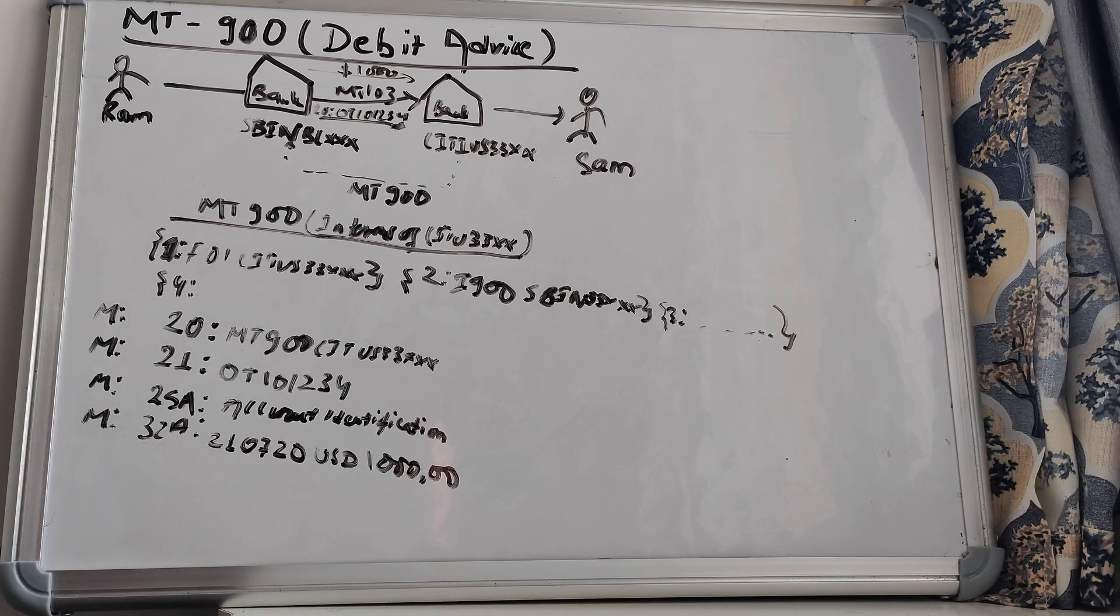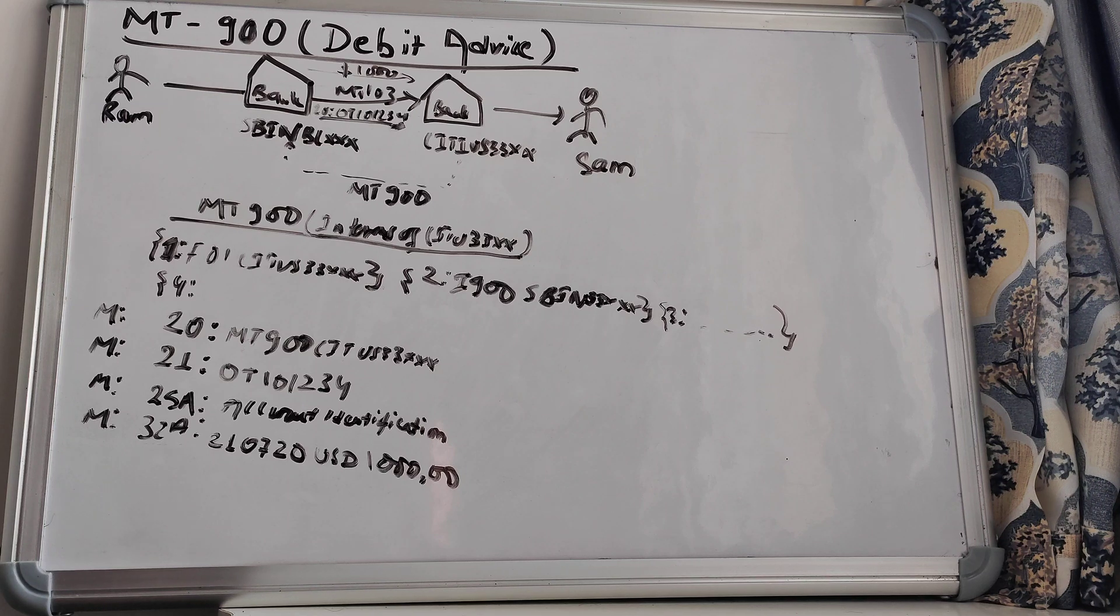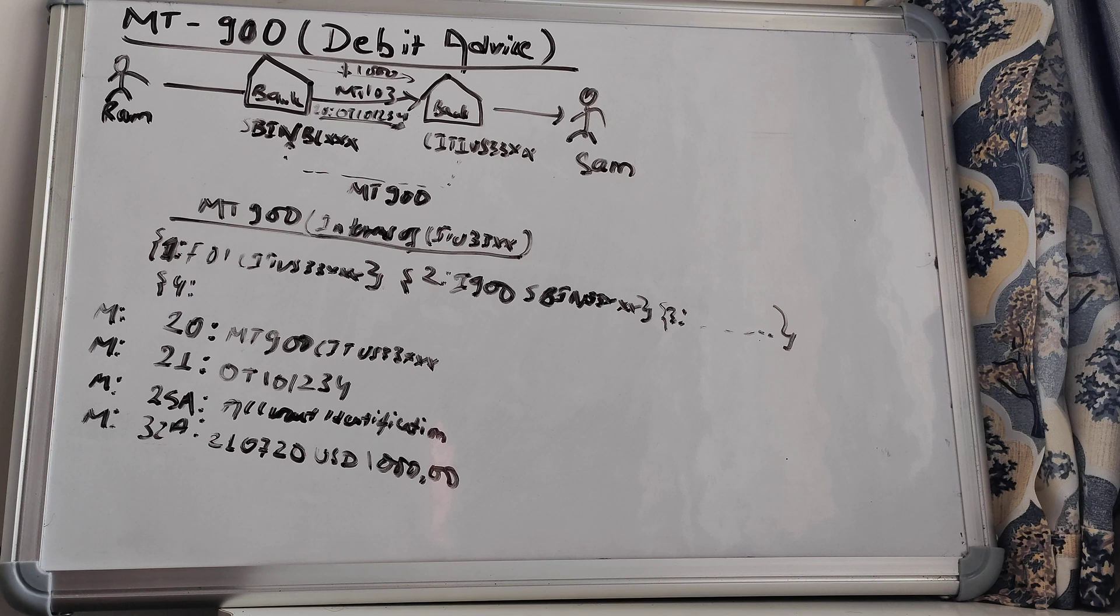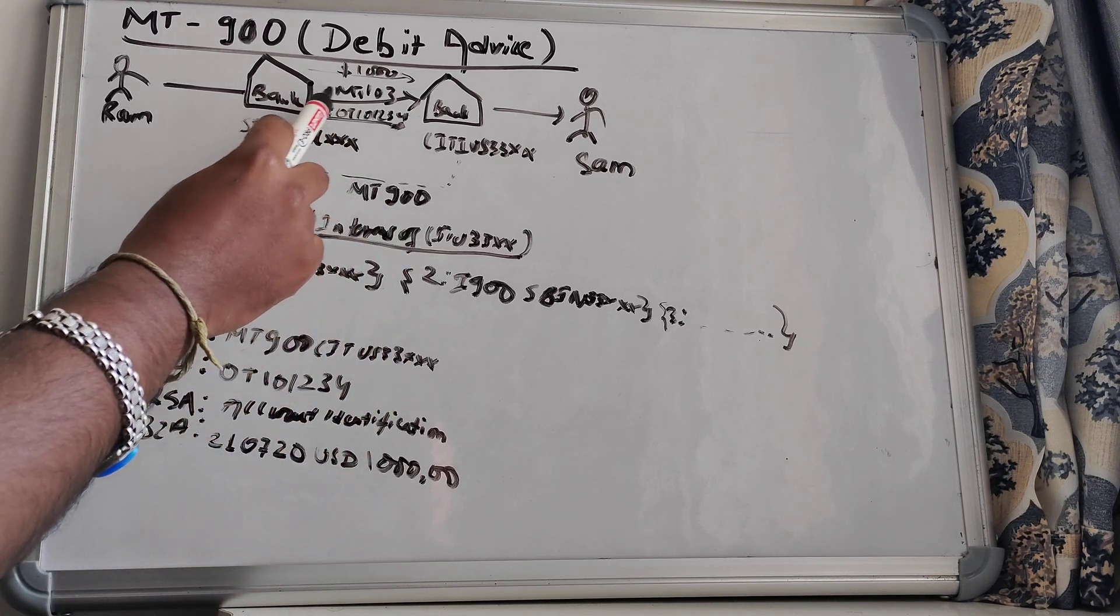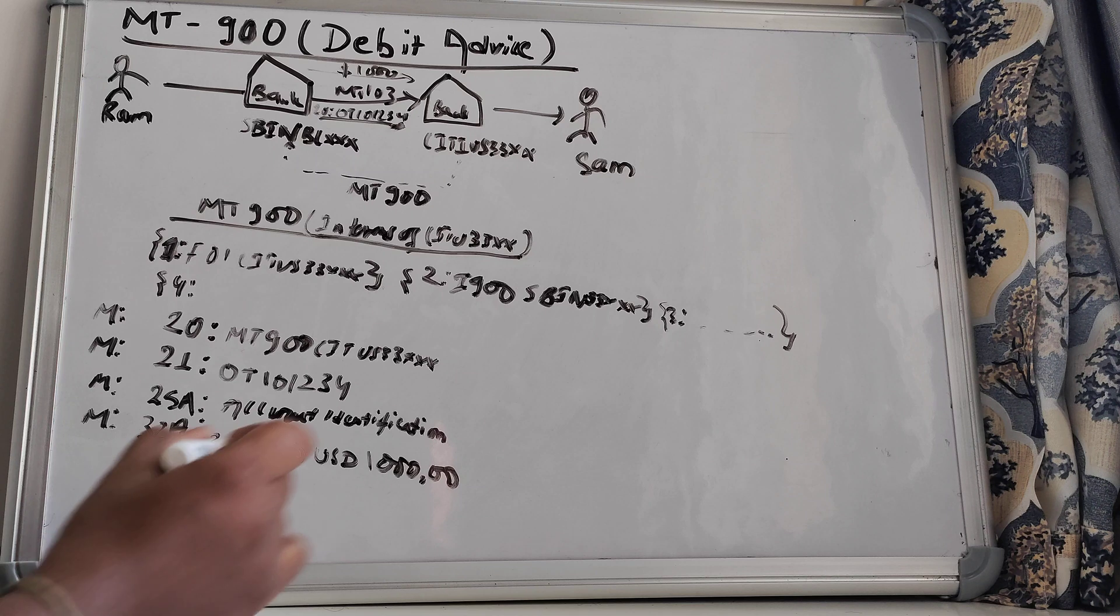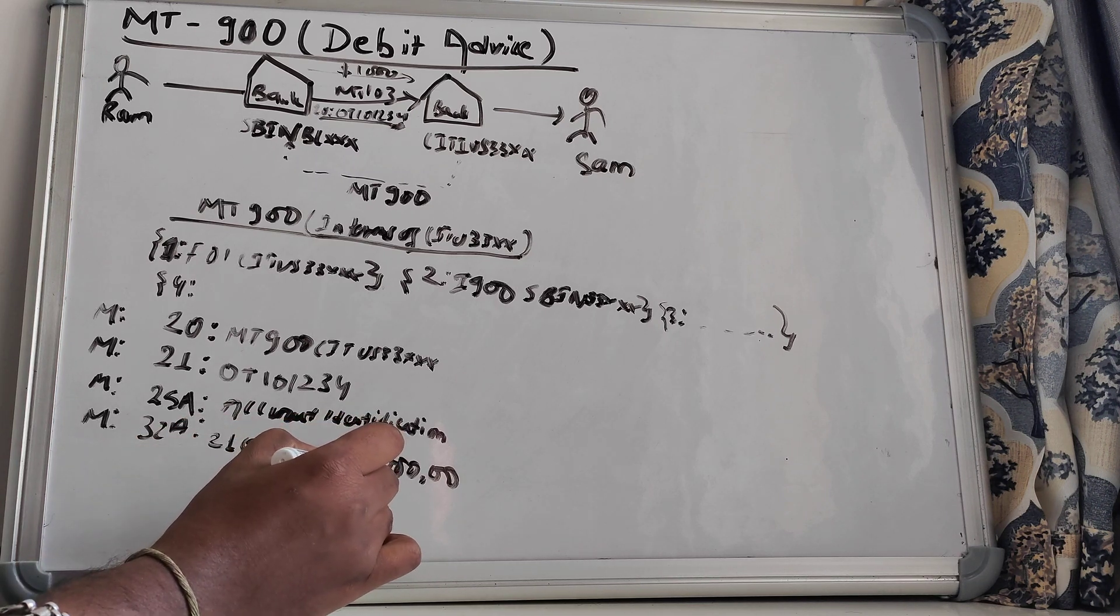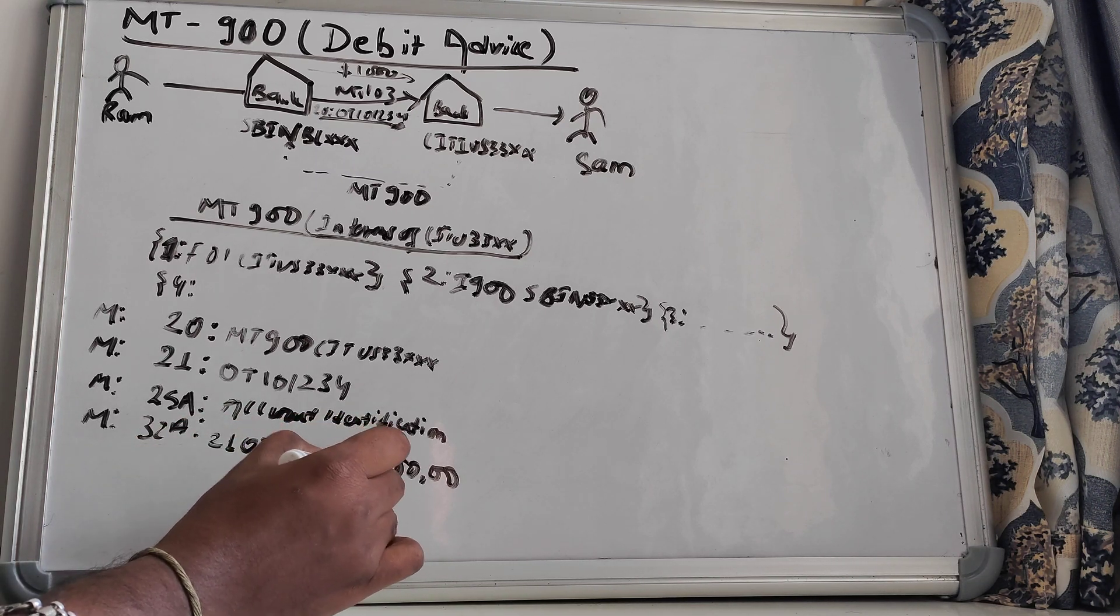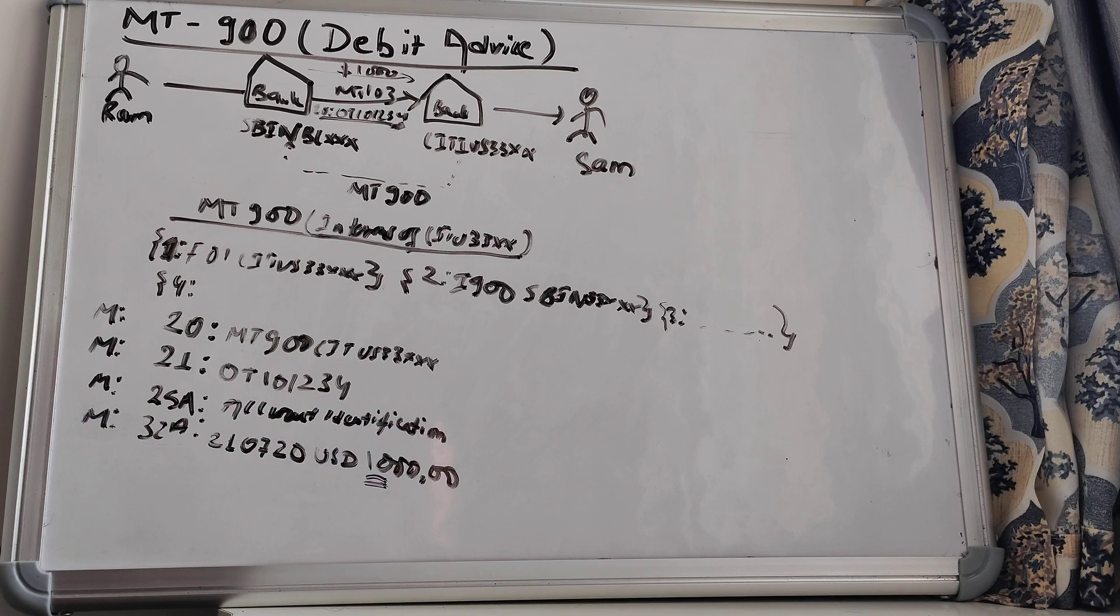So these are all the mandatory tags which will be available in MT-900, which will be sent by City US 33XXX saying that I have deducted your account available at my end. That is a Nostro account for you and Vostro for me. And I have deducted it to make a payment of your instructed message MT-103, that is nothing but this $1,000. So this is all about the debit advice MT-900.